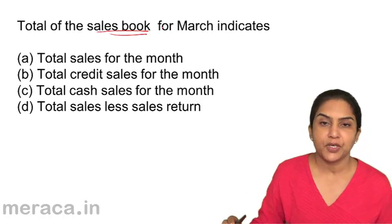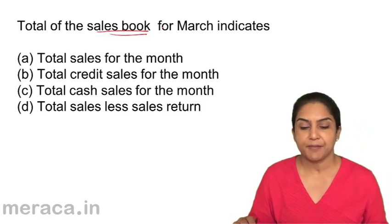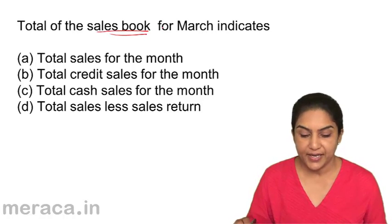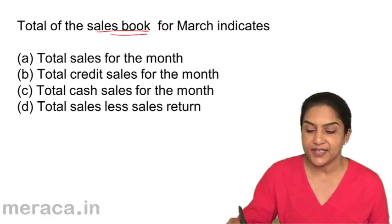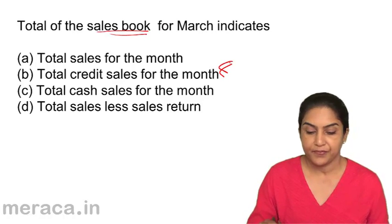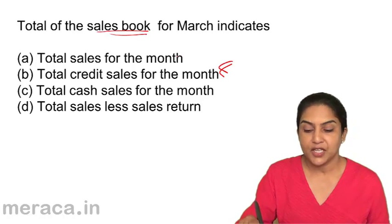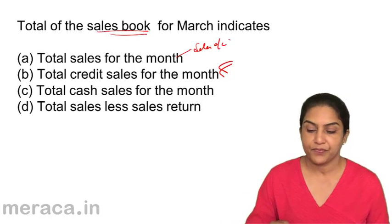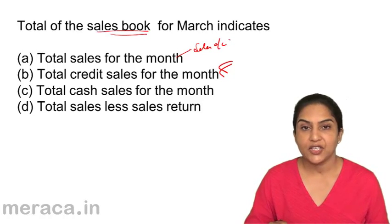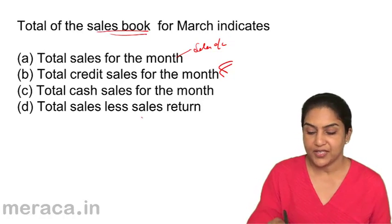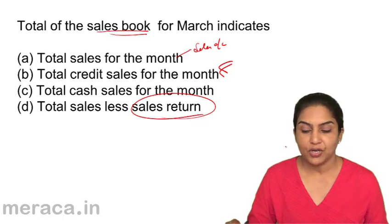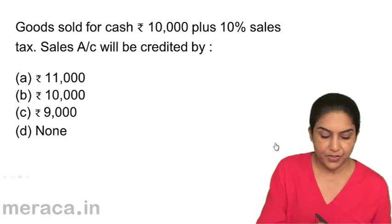The sales book is the sales journal or the sales day book. The total of the sales day book for March will indicate the total credit sales for the month — not the total sales. Total sales we get in the sales account. Total cash sales for the month? No. Total sales less return? No — sales returns go to another book. So the correct answer should be b: total credit sales for the month.